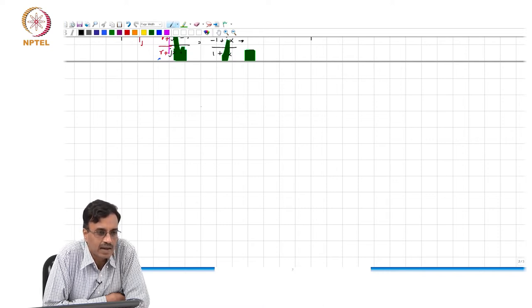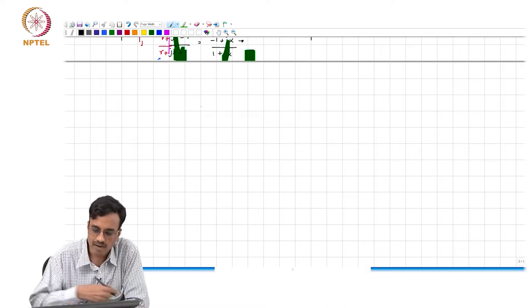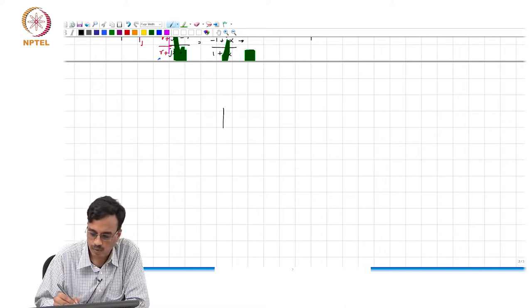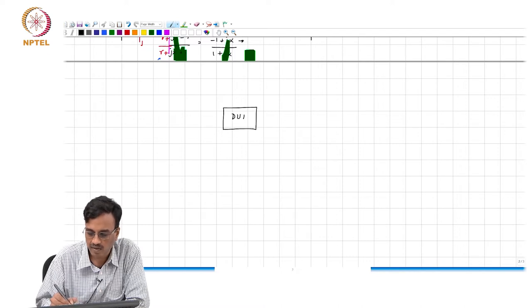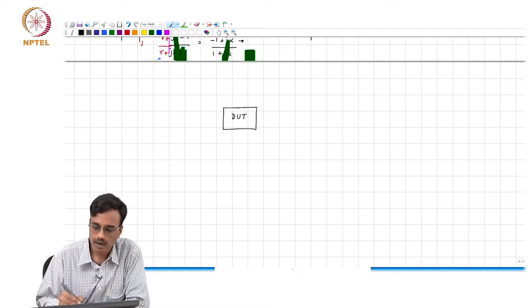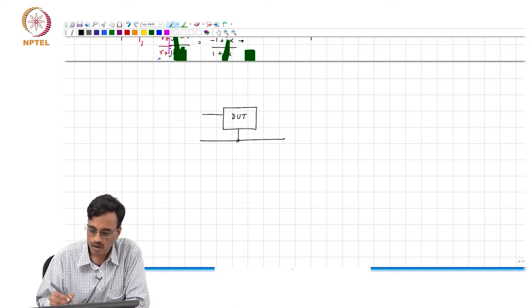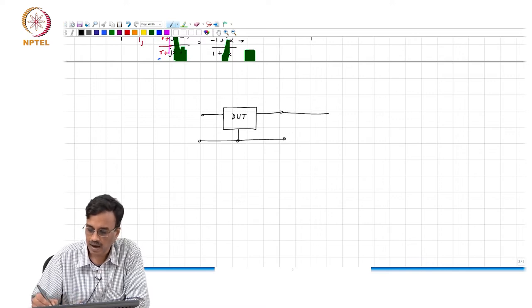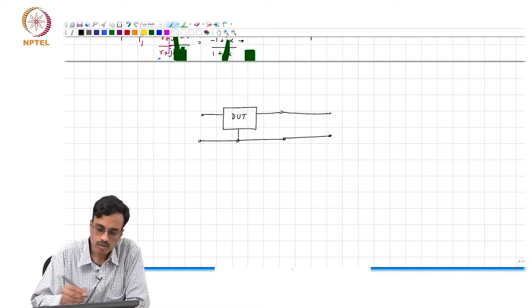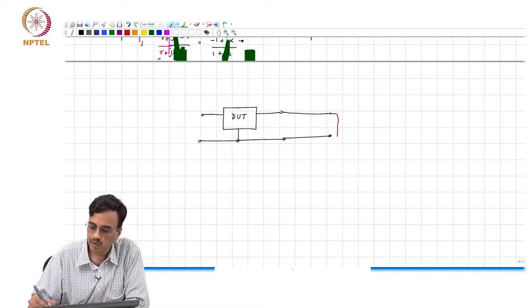Because the length of the transmission line connecting the output port of the device under test. So basically let us say you have often called the DUT device under test and for example, if you wanted to measure the admittance you would technically have a transmission line and then you would attempt to terminate this with a short circuit.